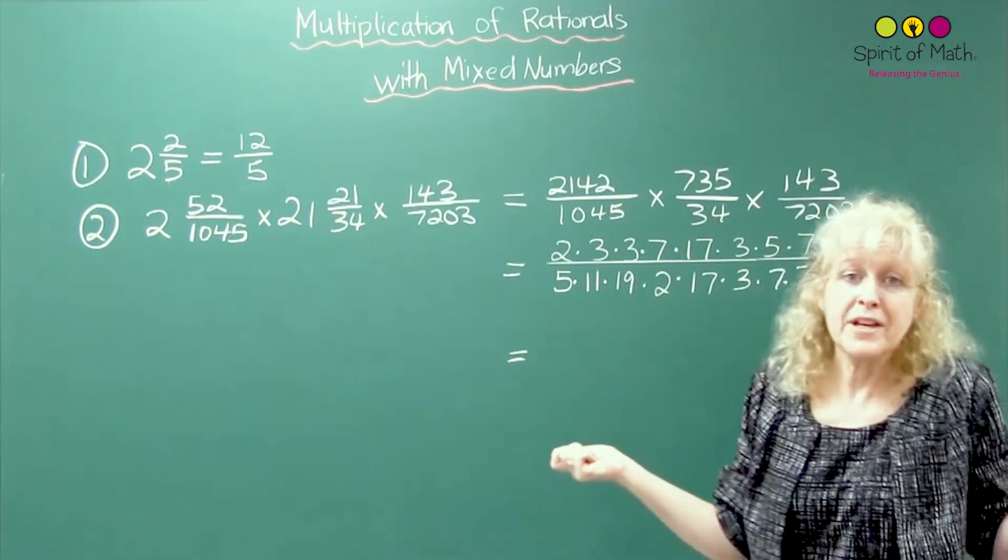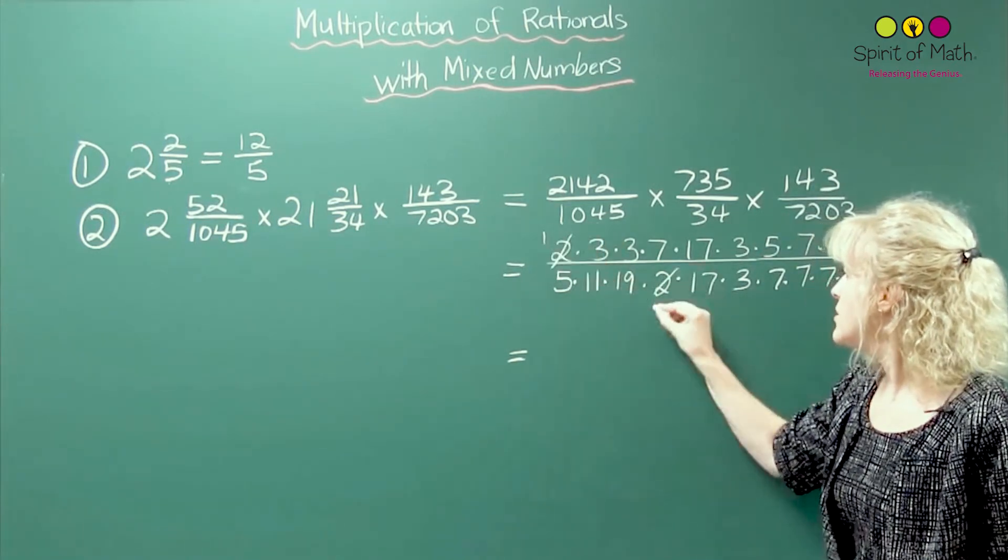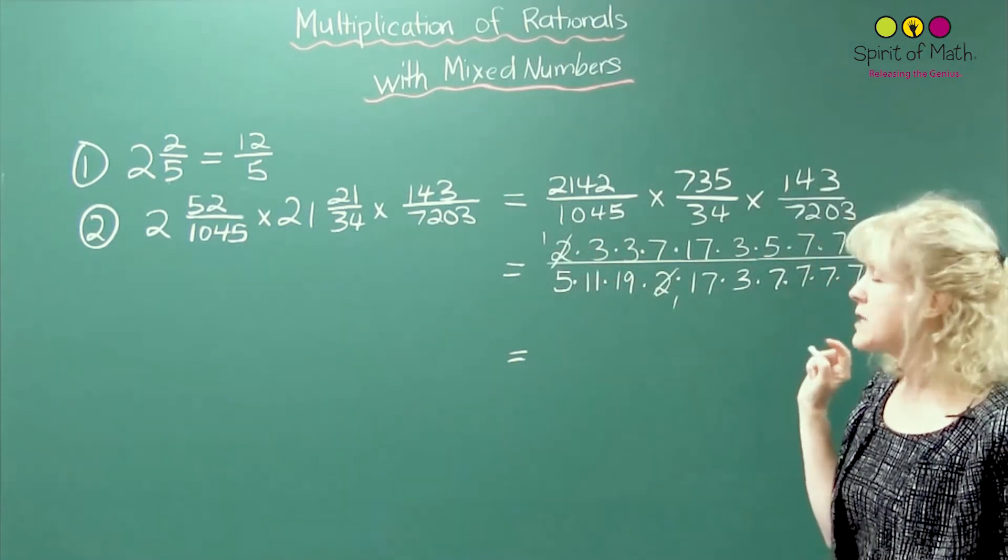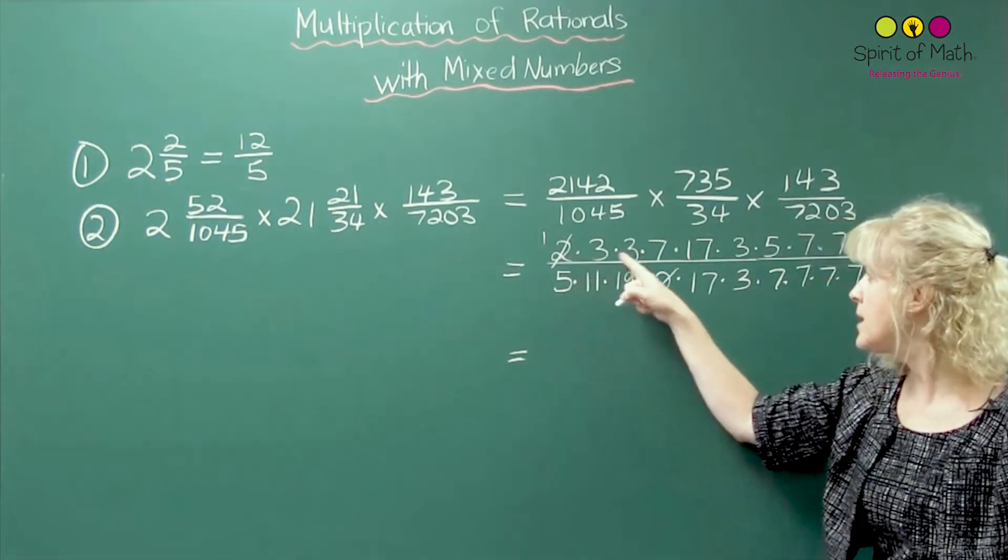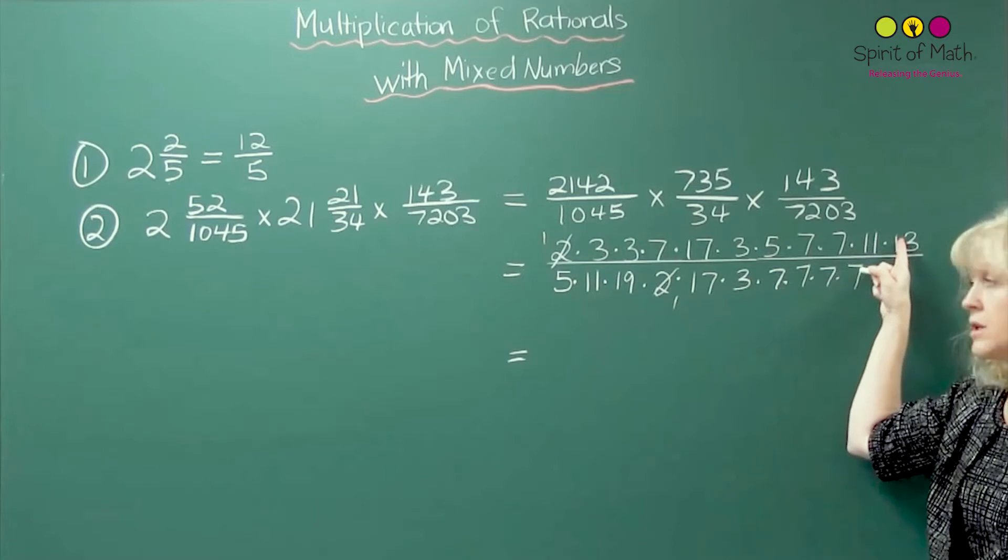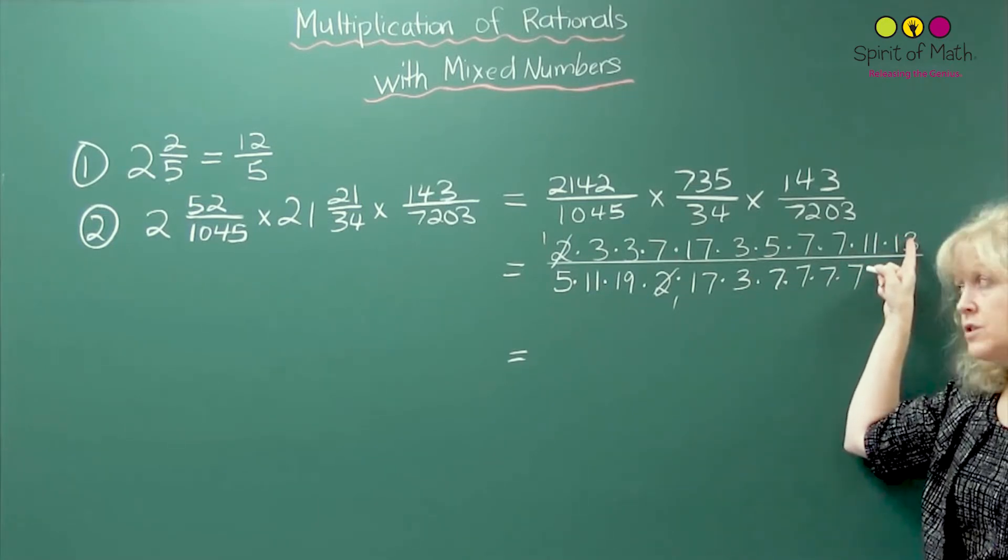And all you have to do now is cancel. So let's just do that together. You have a 2, it goes into 2 once. Now, notice how I'm going to cancel because I'm going to start in the numerator and I'm going to see how many I can take in the numerator. And then once I'm finished that, that's all the cancelling I have to do.